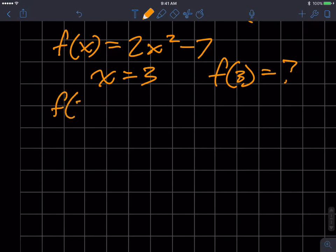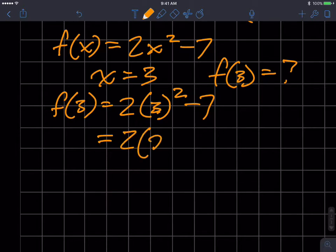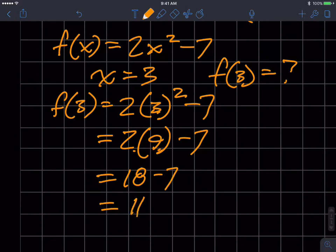So f of 3 is equal to 2. Substitute the 3 in for the x. And now order of operations. 3 squared is 9. So I got 2 times 9 minus 7. And I got 2 times 9 is 18 minus 7. And that is equal to 11, of course. So f of 3 is equal to 11.